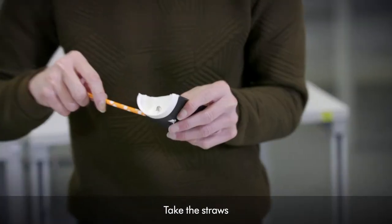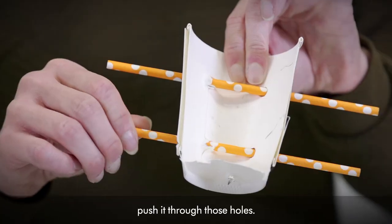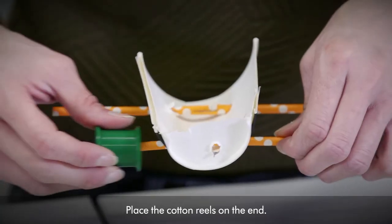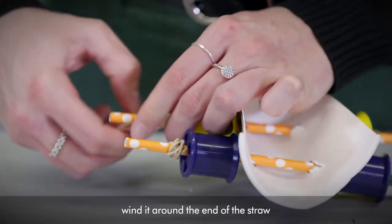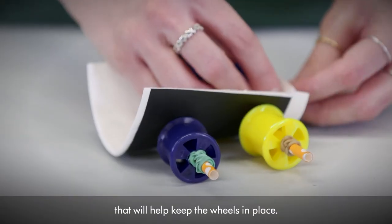Take the straw and push it through those holes. Place the cotton reels on the end. Take a rubber band and wind it around the end of the straw. That will help keep the wheels in place.